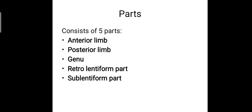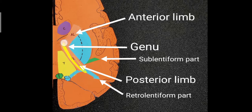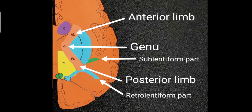Let's see how they are arranged. Here we have a representation of the internal capsule. This V-shaped structure having the angle outwards is termed the internal capsule, through which fibers projecting from the gray matter of the cortex to the subcortical structures are passing. It is composed of an anterior limb, a genu, and a posterior limb.